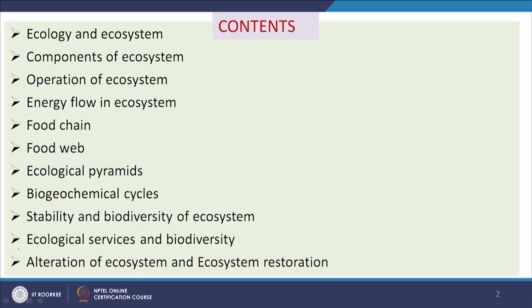So in this class, we will discuss: what is ecology and ecosystem, components of ecosystem, operation of ecosystem, energy flow in ecosystem, food chain, food web, ecological pyramids, biogeochemical cycles, stability and biodiversity of ecosystem, ecological services and biodiversity, alteration of ecosystem, and ecosystem restoration.